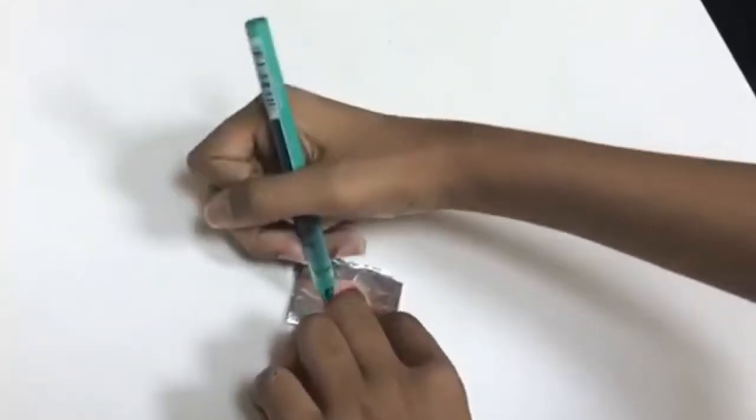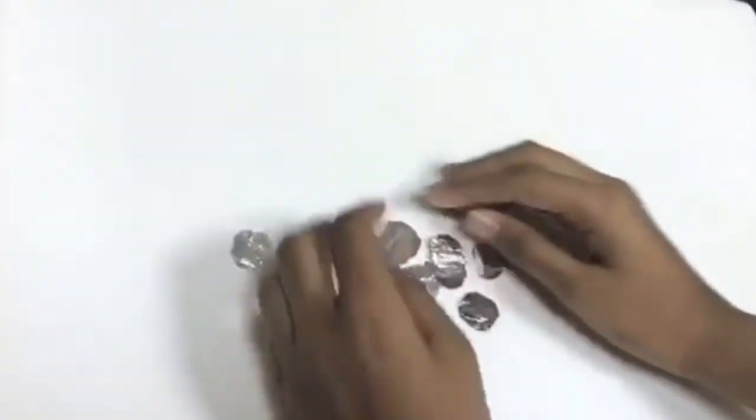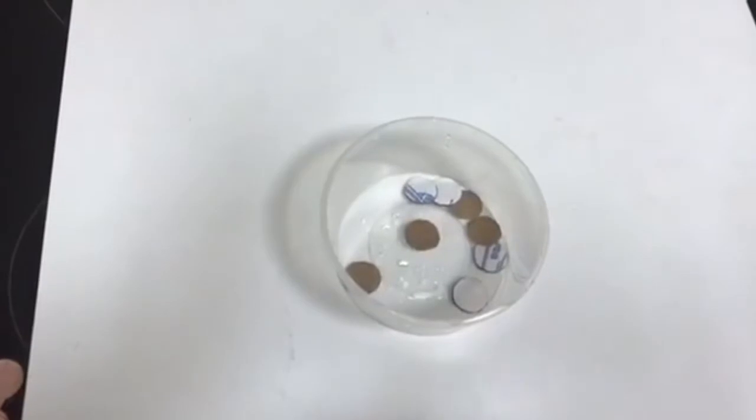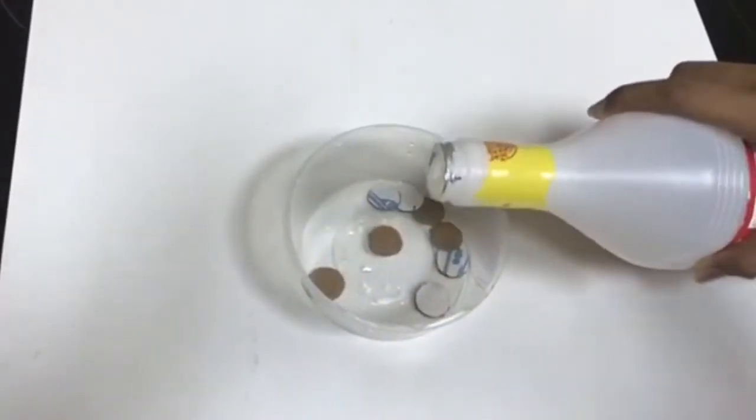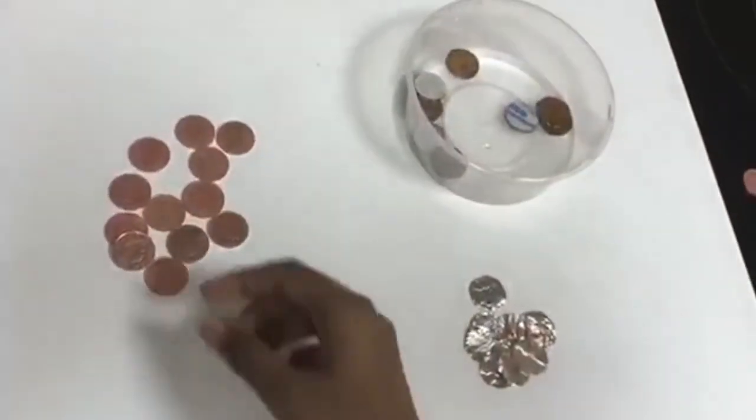Next, do the same to the aluminium foil. Now we're going to want to soak our cardboard cutouts in vinegar. Now we have our equipment ready.